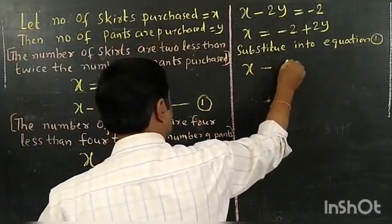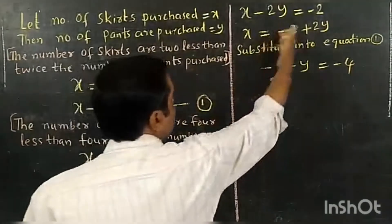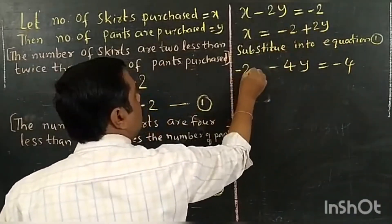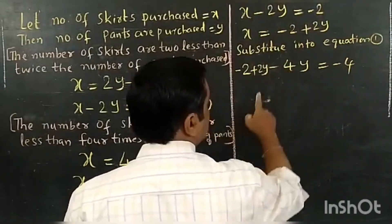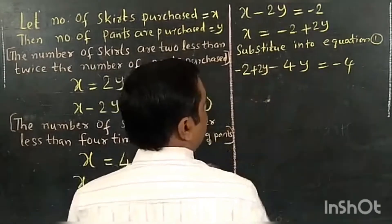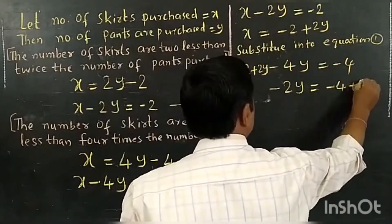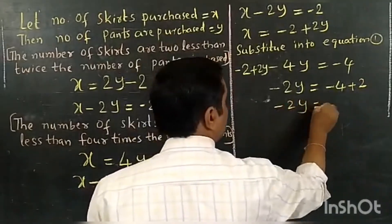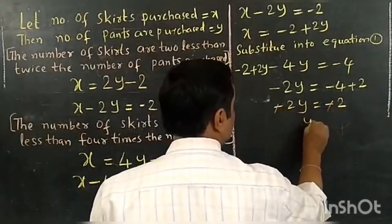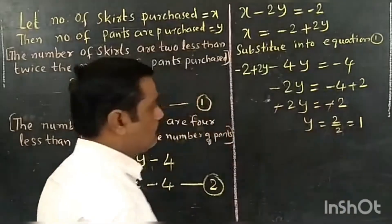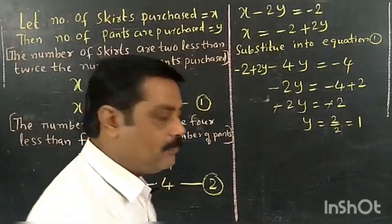The second equation is X minus 4Y equals minus 4. Instead of X, I write minus 2 plus 2Y. So we get: minus 2 plus 2Y minus 4Y equals minus 4. That gives minus 2Y equals minus 4 plus 2, which is minus 2. Since minus signs cancel, Y equals 2 divided by 2, which equals 1. So Y equals 1, meaning the number of pants she purchased is one.